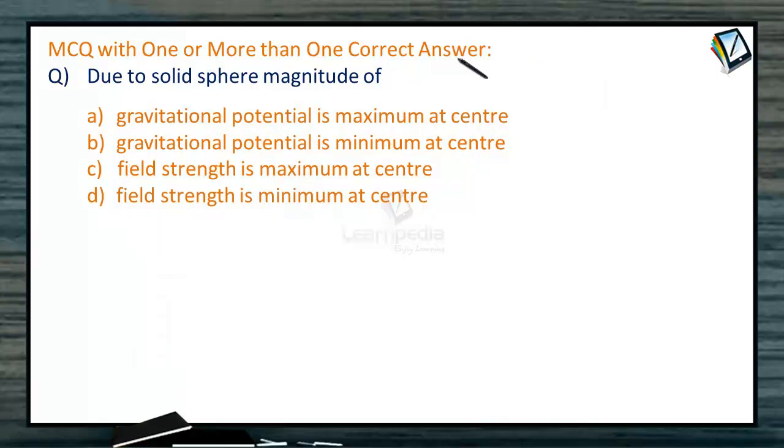MCQ with one or more than one correct answer. Due to solid sphere, magnitude of: a) gravitational potential is maximum at the center, b) gravitational potential is minimum at center, c) field strength is maximum at center, d) field strength is minimum at center.